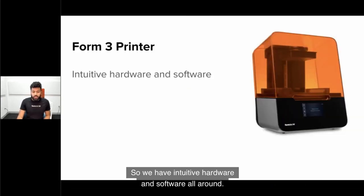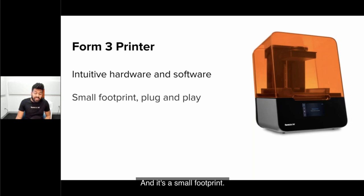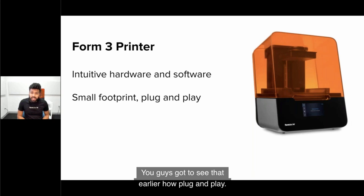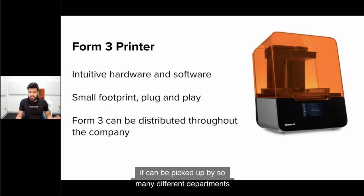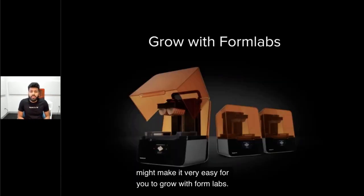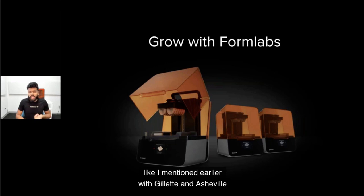Recapping the Form 3: we have intuitive hardware and software all around. It's a small footprint, plug-and-play machine. The Form 3 can be distributed throughout the company. This is a piece of hardware that can scale rapidly because of its small footprint and how easily it can be picked up by different departments. That speaks to one of our missions at Formlabs: it makes it very easy for you to grow with Formlabs. You can get multiple Form 3s and scale like those company examples I mentioned with Gillette and Ashford Orthodontics.